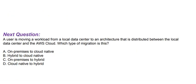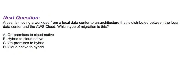Next question: A user is moving a workload from a local data center to an architecture that is distributed between the local data center and AWS cloud. Which type of migration is this? Option A: On-premises to cloud native. Option B: Hybrid to cloud native. Option C: On-premises to hybrid. Option D: Cloud native to hybrid.